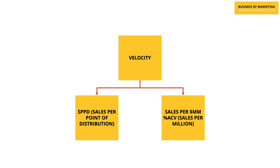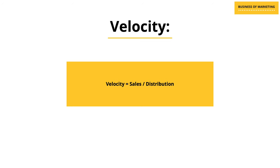As I mentioned, there are primarily two most commonly used measures when it comes to velocity. The first one is sales per point of distribution, also known as SPPD, and the second one is sales per million, also called sales per million percentage ACV. In my last video we spoke about what velocity exactly is and how it is used primarily for comparative purposes — comparing different products within your own portfolio, comparing products with competitors, comparing performance between different markets.